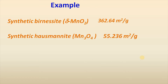Typical examples of specific surface area include synthetic burnsite, which showed a specific surface area of 362.64 meter square per gram. On the other hand, synthetic cosmonite showed a surface area of 55.236 meter square per gram.